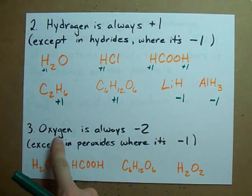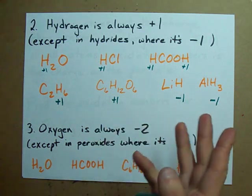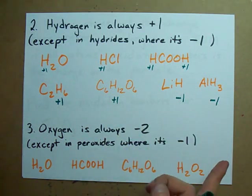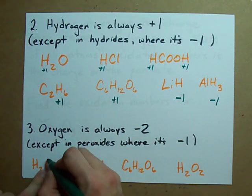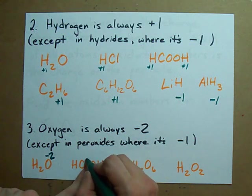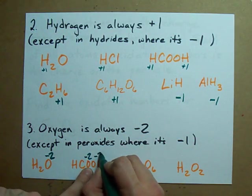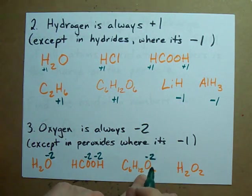Rule three: oxygen's always minus two, except in peroxides where it's minus one. Here's what I mean. Here's a water molecule, there's an oxygen, I bet it's minus two. Here's two oxygens, I bet each of them are minus two. Here's six oxygens, I bet they're all minus two.